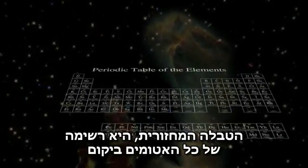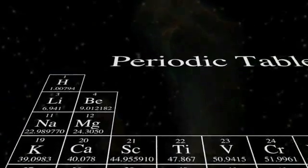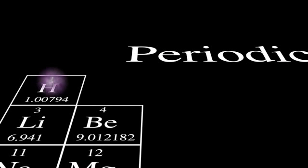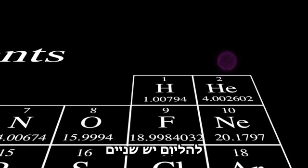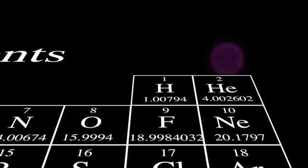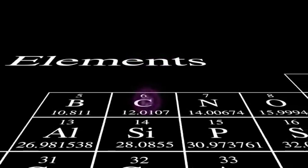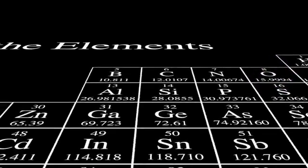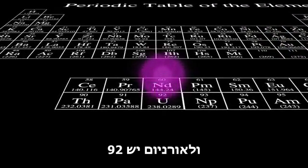The periodic table is a list of all the atoms in the universe that have different numbers of electrons. Hydrogen has one electron. Helium has two. Carbon has six. Oxygen, eight. Gold has seventy-nine. And uranium has ninety-two.